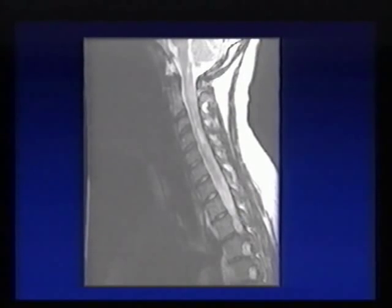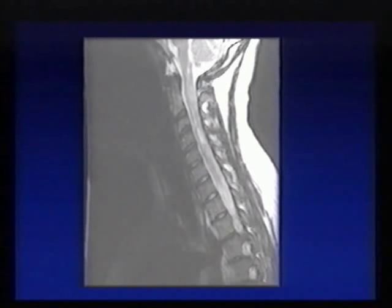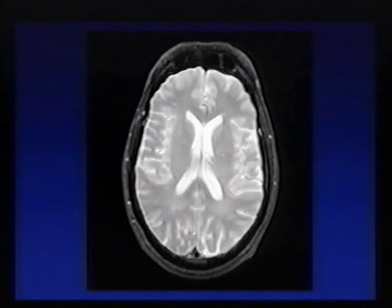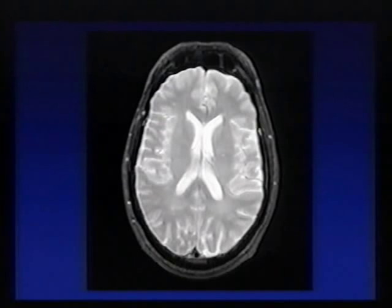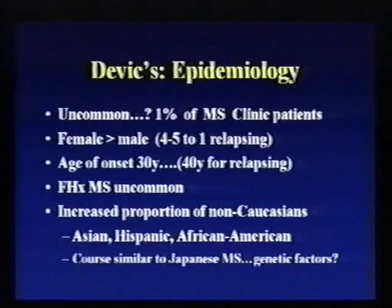This is one of her MRIs, which shows a lesion beginning at the C5 vertebral level and extending all the way up almost into the brain stem — the lower part of the medulla. And this is her brain scan, which despite having 15 attacks, really is almost completely normal. There are a couple of tiny little white spots, but this certainly doesn't meet the criteria for what we see in multiple sclerosis.